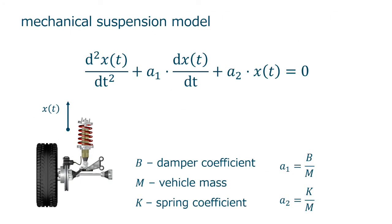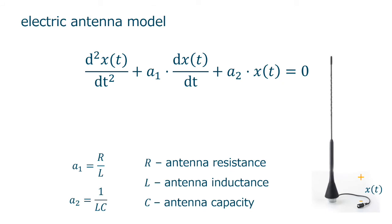If we use the laws of mechanics to model this system, we come up with a second-order differential equation, like this, where coefficients a1 and a2 are computed from the mechanical characteristics of the components. In a similar way, if we use the laws of electric circuits to model the antenna, we also come up with a second-order differential equation, where coefficients a1 and a2 are computed from the electric characteristics of the components. You see the point?